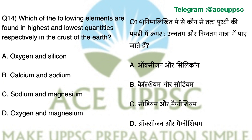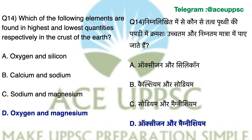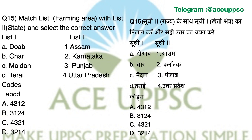Question number 14. Which of the following elements are found in the highest and lowest quantities respectively in the crust of the Earth? The answer is D: Oxygen is the highest quantity and Magnesium is the lowest quantity. You can recall the sequence of elements arranged in the Earth's crust with oxygen being the most abundant.